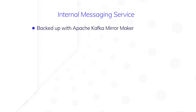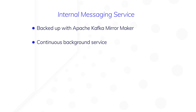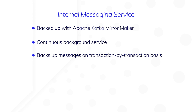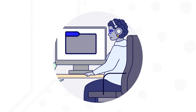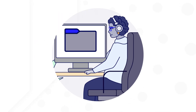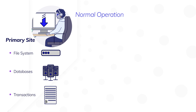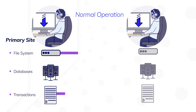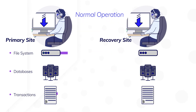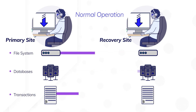The internal messaging service is backed up using Apache's Kafka MirrorMaker solution. This open-source solution is a continuously running process that backs up data on a transaction-by-transaction basis. MirrorMaker requires that Appian be installed and that the internal messaging service be running in your recovery environment. The internal messages will be backed up continuously as new transactions are created.